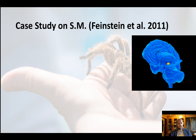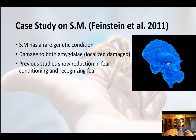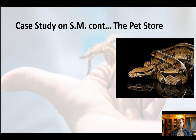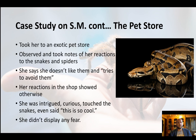SM has a rare genetic condition — bilateral amygdala damage. We can see the amygdala on both sides of the brain; she has damage to both, making her a very valuable case to study. Previous studies showed she can't recognize fear in other people's faces and can't be fear-conditioned. They gave her three tests: an exotic pet store, a haunted house, and film clips. At the pet store, when asked about snakes and spiders she said she tried to avoid them, but inside the store she was intrigued and wanted to touch the big snake — no fear response whatsoever to these very dangerous animals.